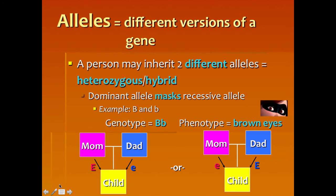This is the mother's genotype. We know this because she obviously has brown eyes, so we give her the brown eye gene. But her son had blue eyes, which means she carries the blue eye gene.